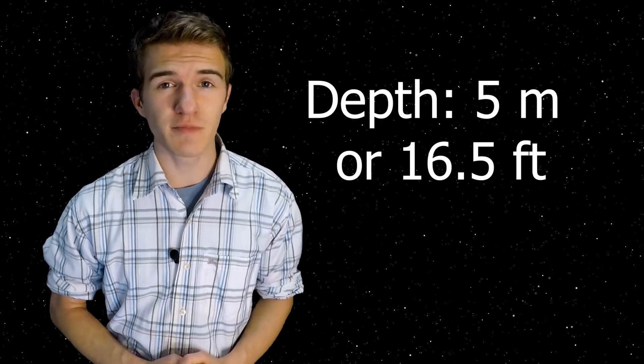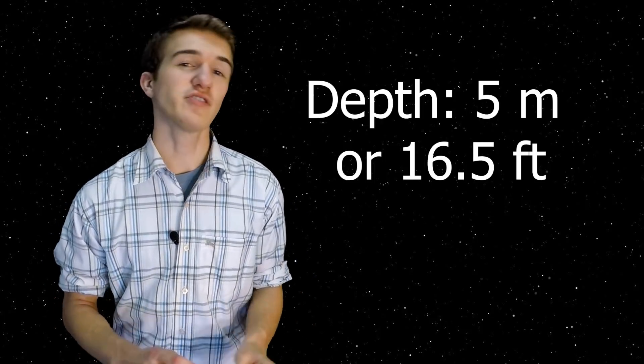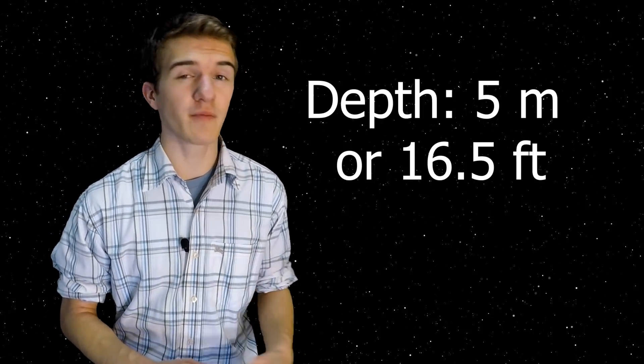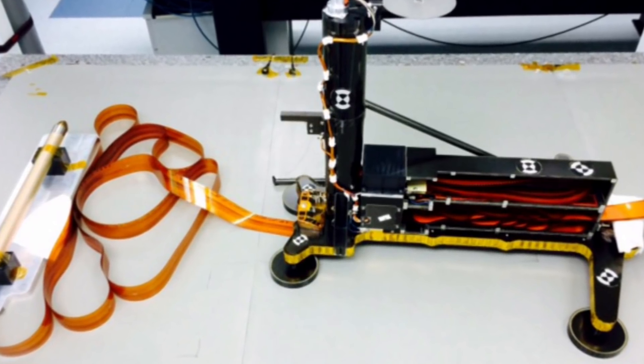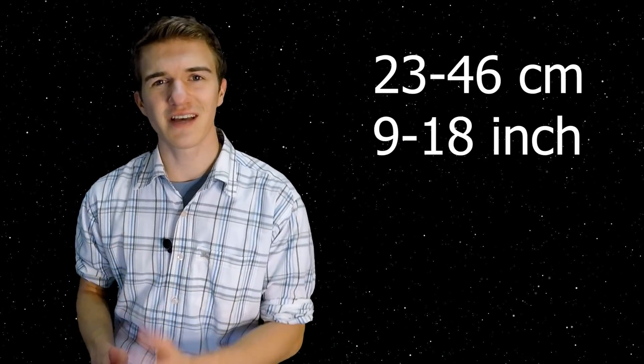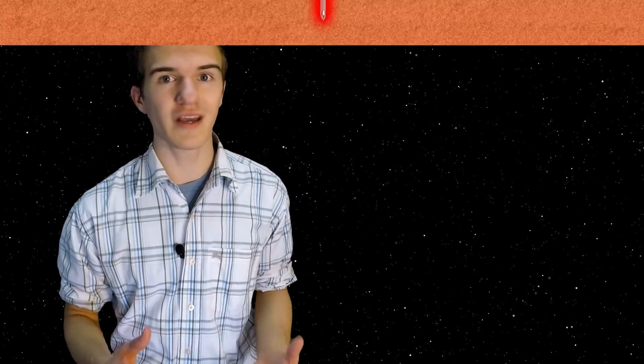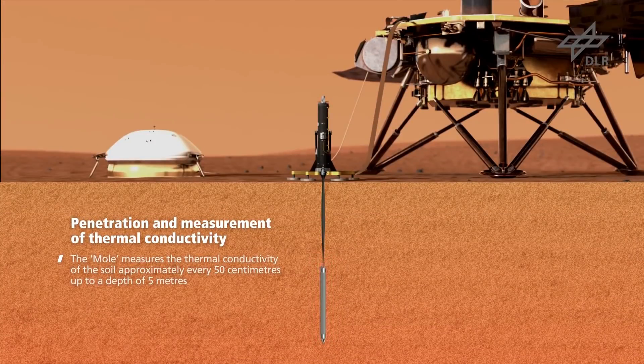So how exactly is HP3 going to get this information? The probe is going to burrow itself five meters below the surface of Mars, and there's going to be a tether that connects the very bottom probe all the way back to the lander itself. On that tether, every around 23 to 46 centimeters, there will be a heat sensor that's going to measure the local heat in the area or the depth that it is at.